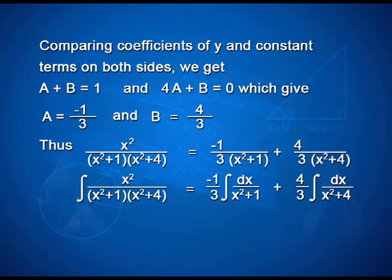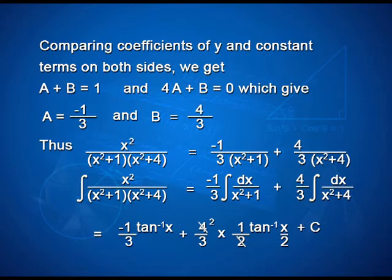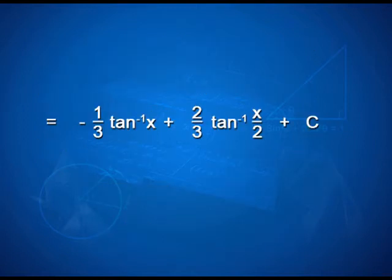Therefore, the integral of x²/((x²+1)(x²+4)) dx equals -1/3 · integral dx/(x²+1) + 4/3 · integral dx/(x²+4), which equals -1/3 tan⁻¹x + 4/3 · (1/2) tan⁻¹(x/2) + C, simplified as -1/3 tan⁻¹x + 2/3 tan⁻¹(x/2) + C.